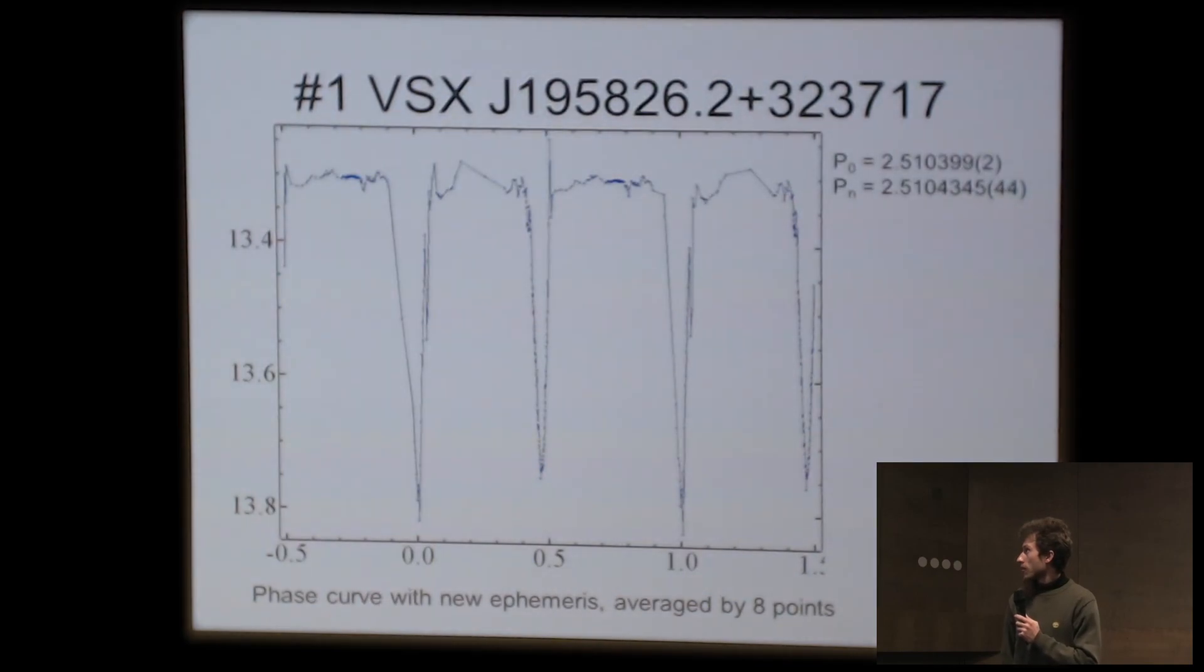This is the light curve. The phase curve was averaged by eight points because of light scatter. This is a faint object somewhere on the edge of field of view, so it's normal.